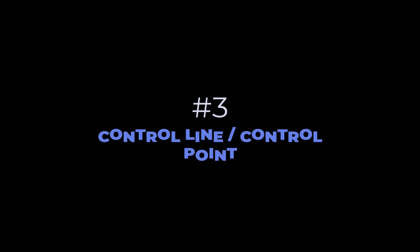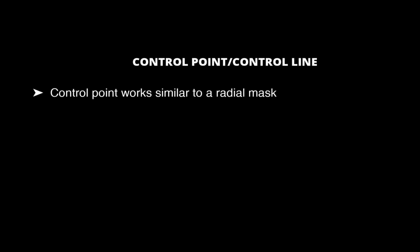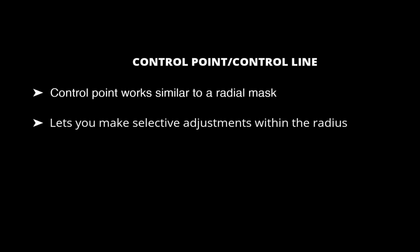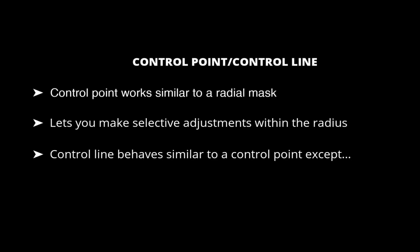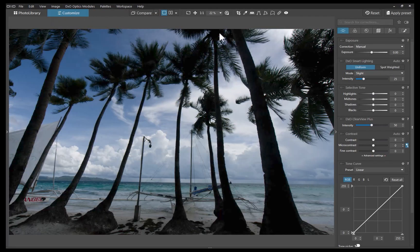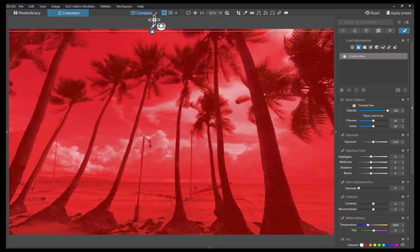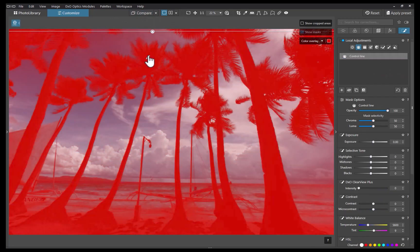The third tool is Control Line and Control Point. We've discussed these tools in a previous video, so I won't be going through this in detail — I'll leave a link in the description. As a quick summary, Control Points work similar to a radial mask and let you make selective adjustments to areas defined by the Control Point's radius. Control Lines use the same principles, except that instead of a radial mask, they work more like a graduated filter covering the entire width of the image. From the Local Adjustments panel, I'll select Control Line, and move the eyedropper to point to a darker tone. As you can see, with just one step, a relatively precise mask has been created.